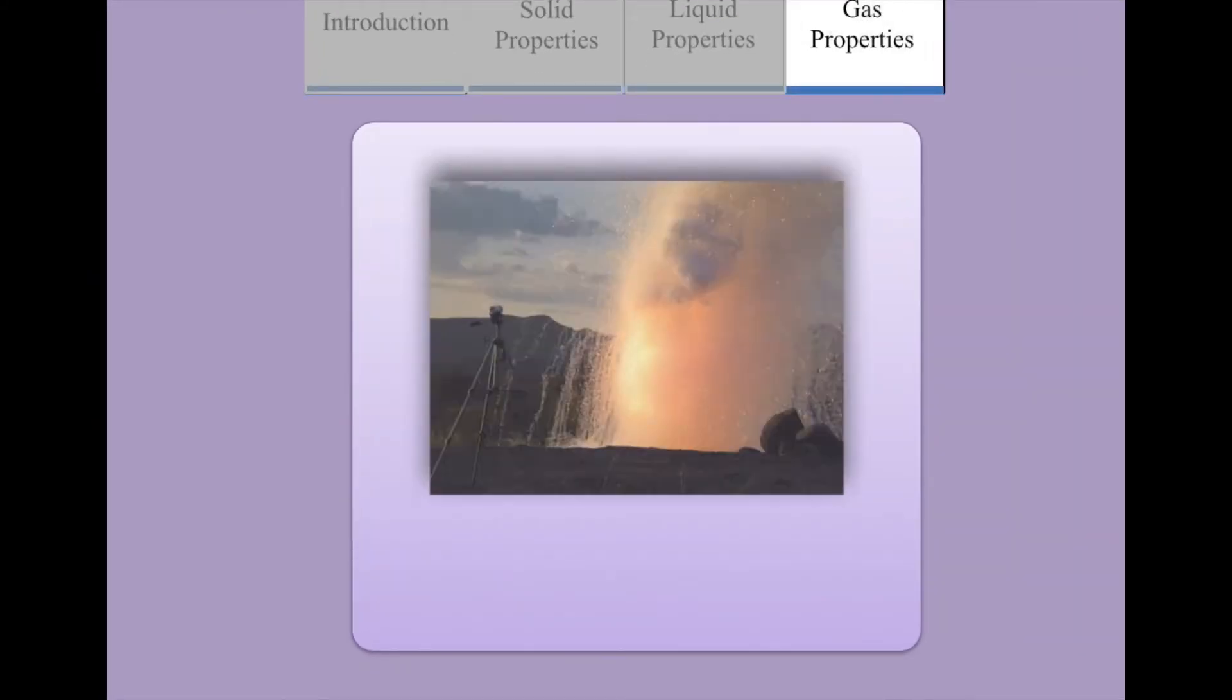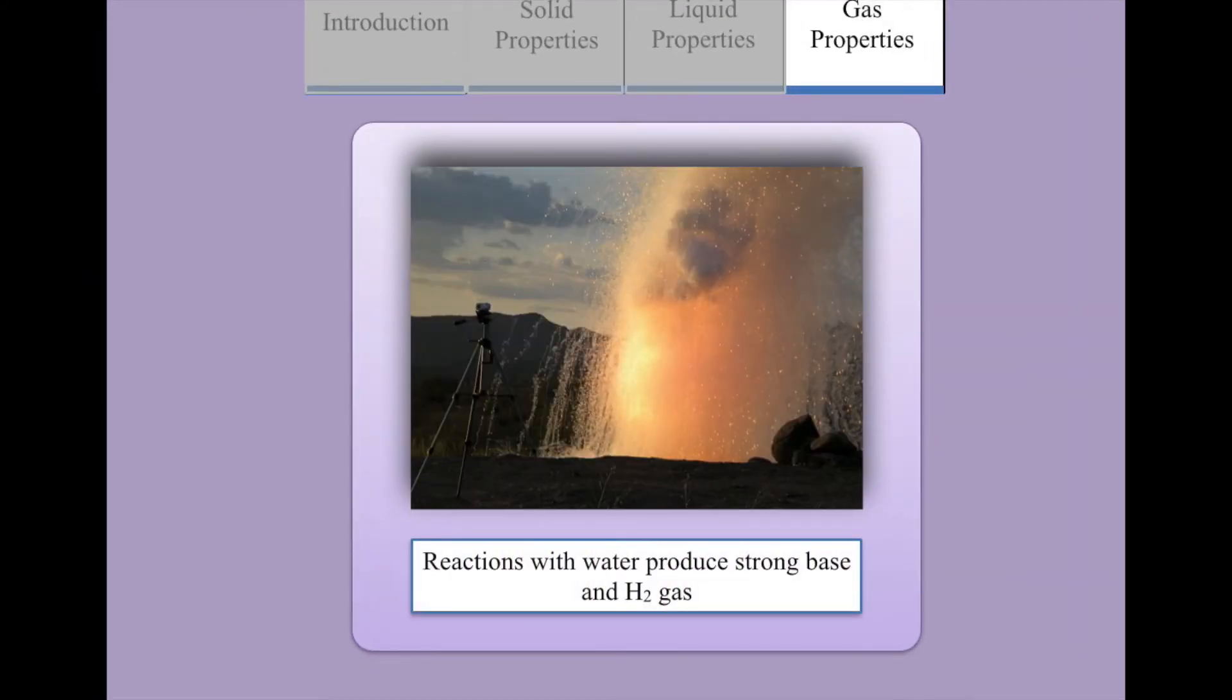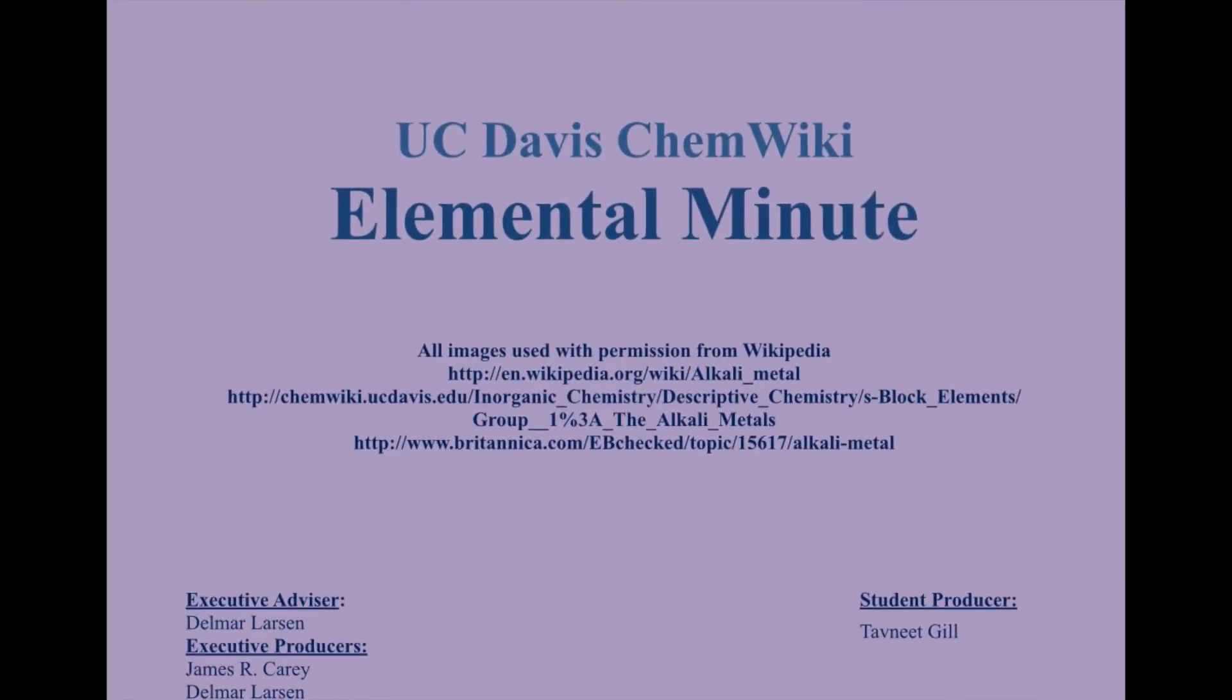Alkali metals have no distinct gas properties, however, they react to form gaseous products. For example, all the alkali metals react vigorously or explosively with water, producing an aqueous solution of a strong base alkali metal hydroxide and releasing hydrogen gas.